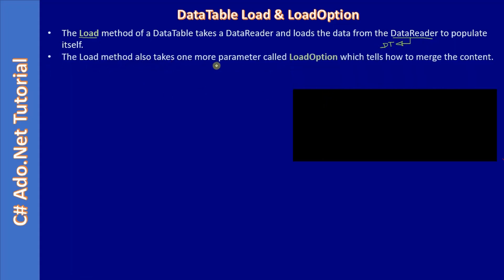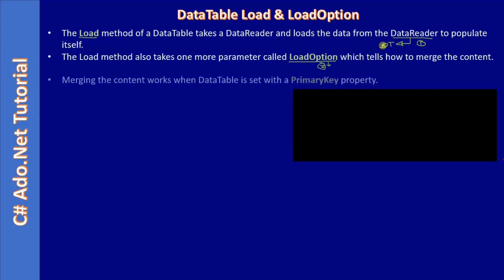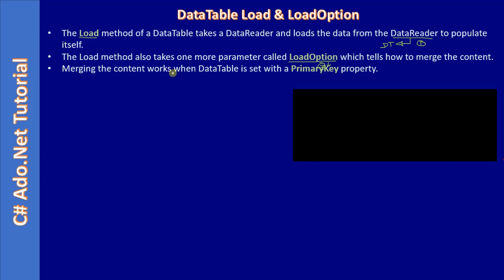The Load method also takes one more parameter. Parameter one is the DataReader; it can also take a parameter called load options. This load option tells how to merge the content. The DataTable is set with a primary key, and the load option tells how to merge the existing data with the incoming data. Merging the content works when the DataTable is set with a primary key.